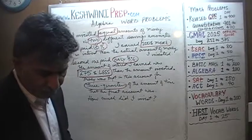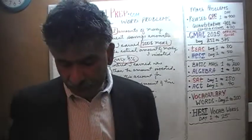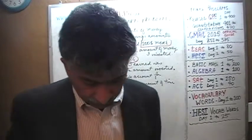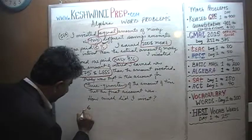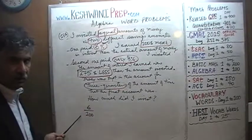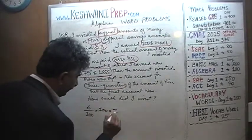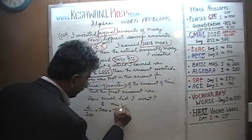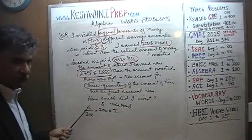Before we actually start solving the problem, we need to understand the basic concept of how to express the amount of money that one earns for a given amount of investment, time period, and interest rate. We know we're getting 6% in the first account — 6% means 6 over 100. So how much do I earn if I invest $100 for one year? The hundreds cancel out and I earn $6.